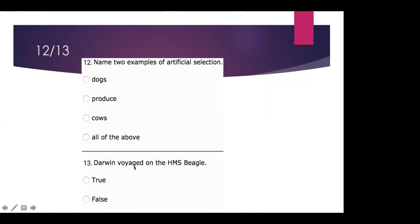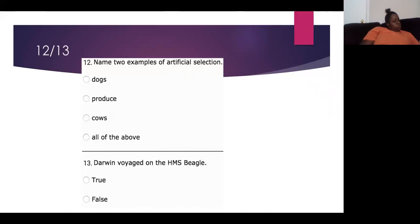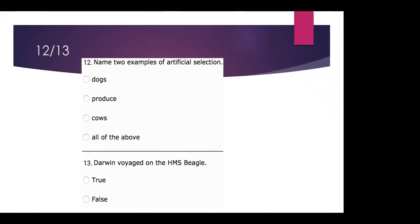Darwin voyaged on the HMS Beagle — is that true or false? True. That is what he voyaged on when he went to the Galápagos Islands, where he witnessed all the different birds with their different beak sizes. He thought about why all these birds have different beaks, and it's because they're eating different things — they adapted over time.